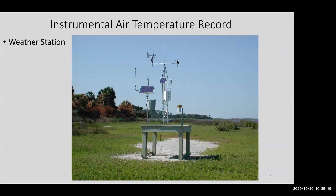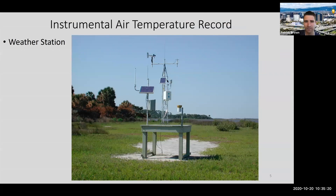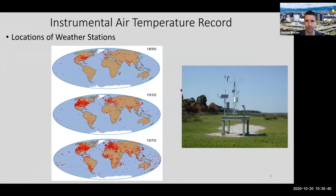It also measures solar radiation, wind, rain, and all sorts of other things. We have networks of weather stations around the world, and this is the current way that we're measuring global temperature. Here's a map of how the distribution of these has changed over time.